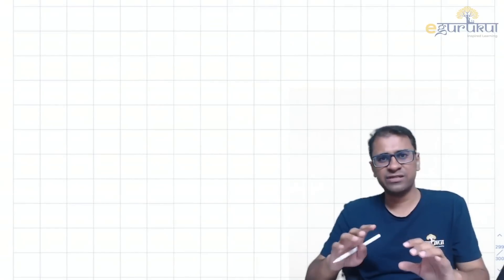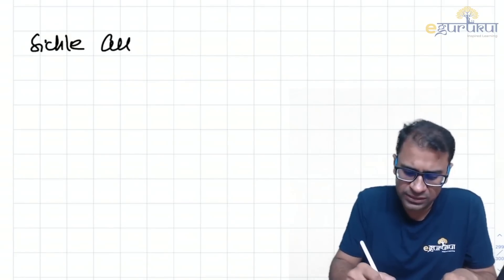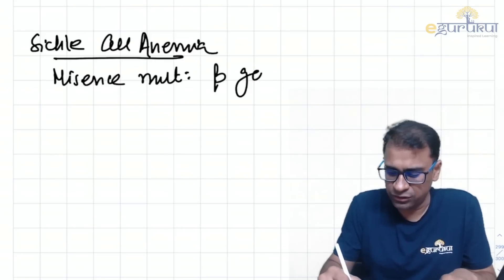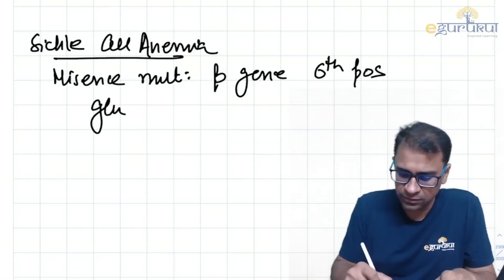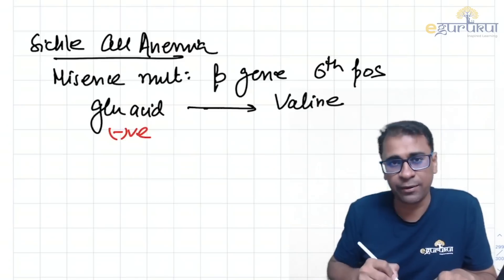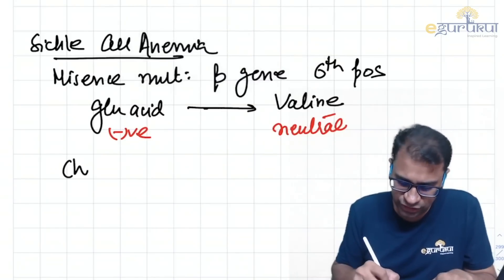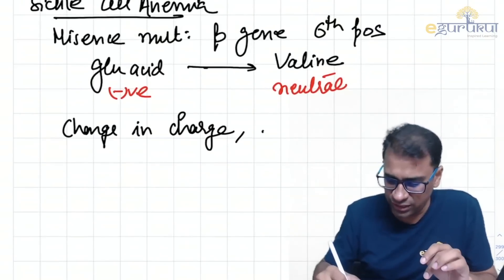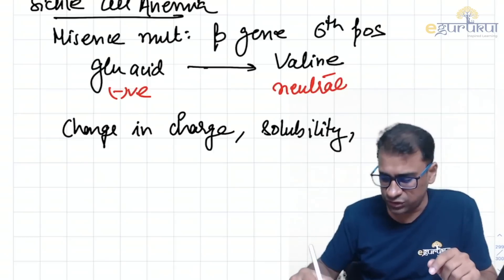Sickle cell anemia is a very important topic with multiple questions asked in the PGME. Sickle cell anemia is basically a missense mutation in the beta gene, on the sixteenth chromosome, at the sixth position. Normally, glutamic acid is replaced by valine. Glutamic acid is a negatively charged amino acid and valine is a neutral amino acid. Because of this change in charge, there is a change in solubility, and this causes a change in structure.